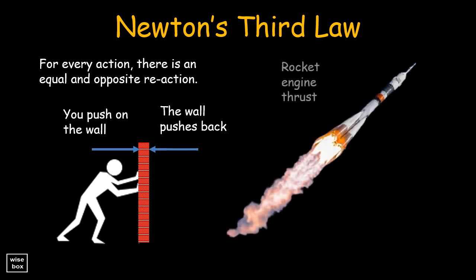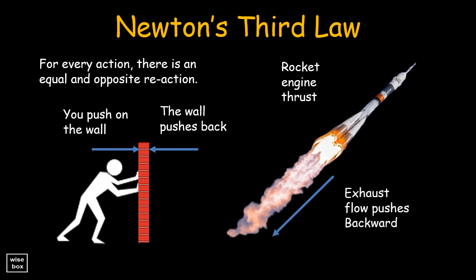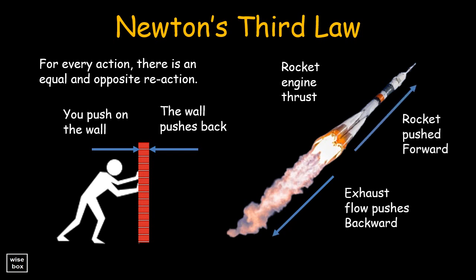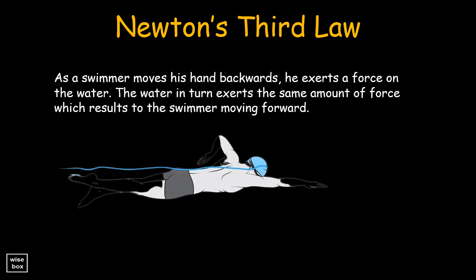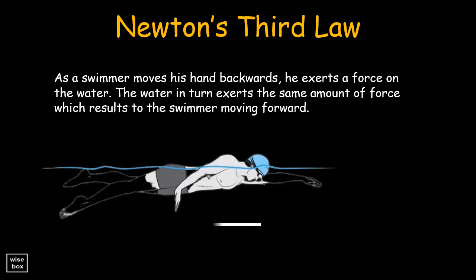During the launch of a rocket, as the exhaust flow pushes backward, the rocket is pushed forward. Here is a great illustration: as a swimmer moves his hand backwards, he exerts a force on the water. The water in turn exerts the same amount of force, which results in the swimmer moving forward.